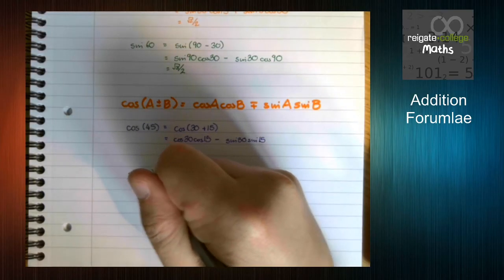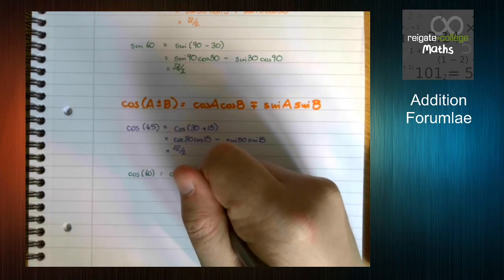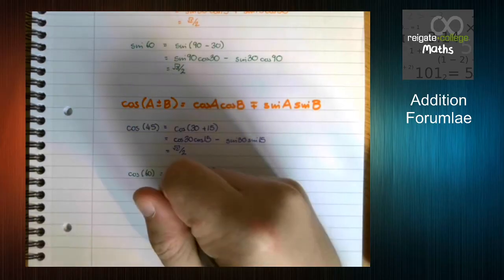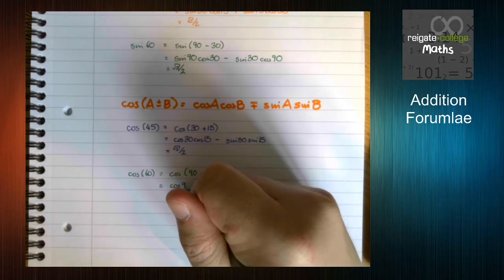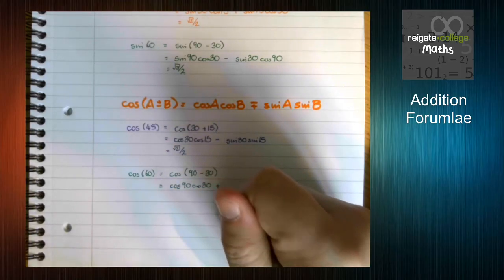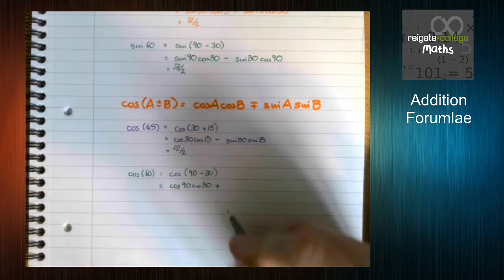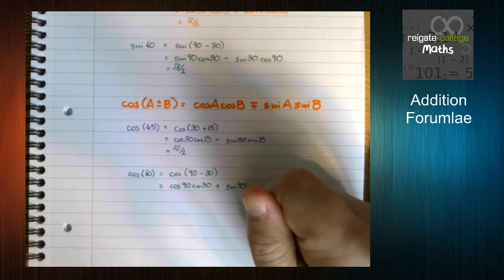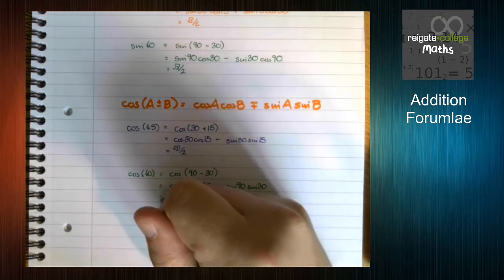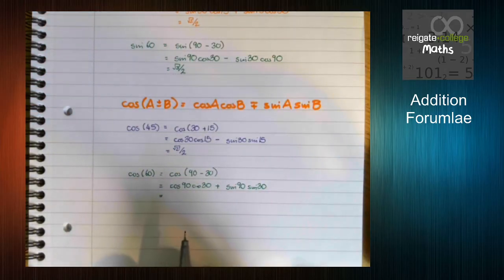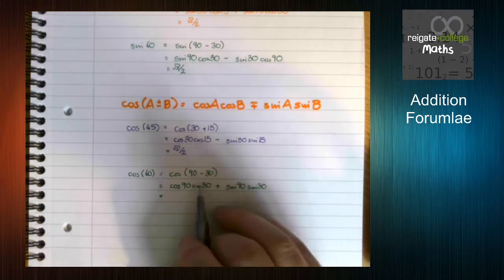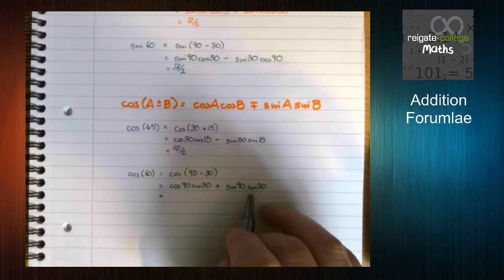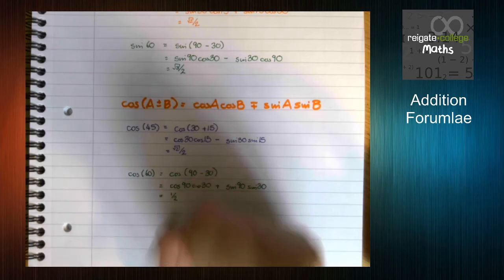Cos 60 we can write as cos 90 minus 30. Cos 90 cos 30, which is going to be cos 90 cos 30 plus this time, remember the sign is different, sine 90 sine 30. And again we can see that this is going to work out to be what we expect. Cos 90 is 0, sine 90 is 1, so sine 30 is a half, which is what we wanted.